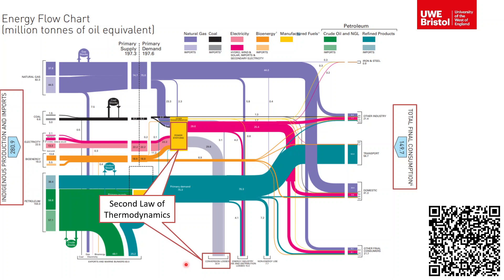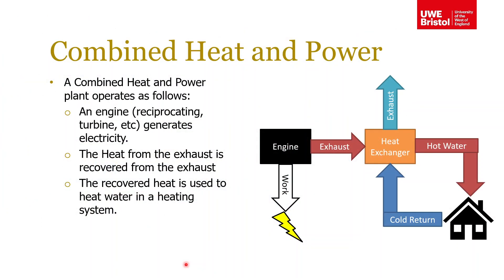That's what combined heat and power is all about. The idea of a CHP plant is that you actually recover some of that energy from the exhaust. A combined heat and power plant operates on the following principles: you have your heat engine — that could be a reciprocating engine, a turbine, or whatever — and it generates work, which you then use to produce electricity. The exhaust gases, which would normally be wasted to satisfy the second law, are instead utilised.